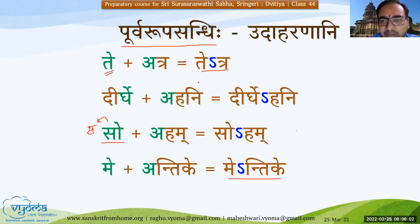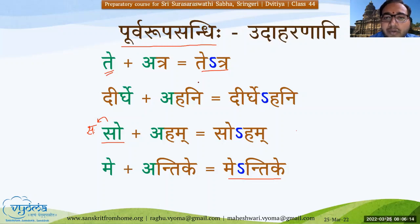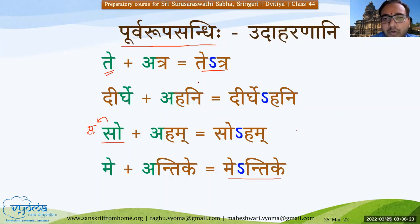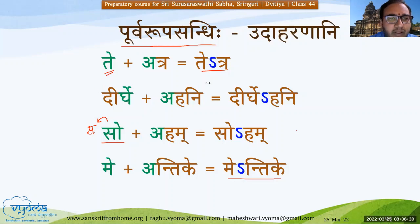There's one more question in the chat box: could you give one example of using a sentence in chaturathi bhakti - that is, for amushmai and amushmayi? So, 'amushmai balakaya modakam dadatu' means 'give the sweet to this boy.' 'Amushmayi balikai vastram dadatu' means 'give clothes to this girl.' Those can be example sentences for amushmai and amushmayi.